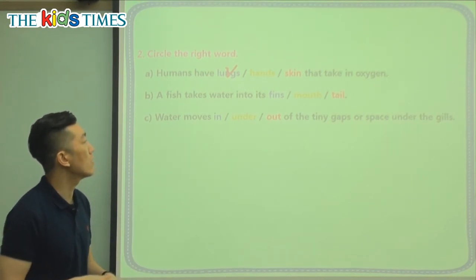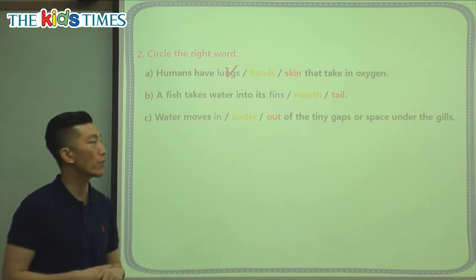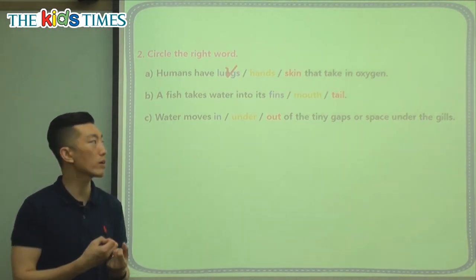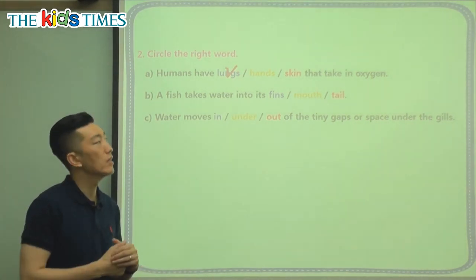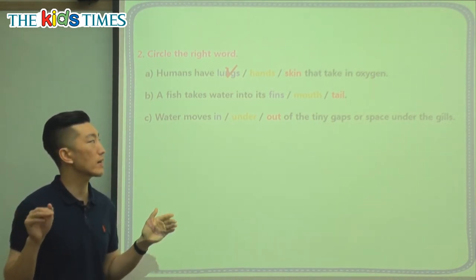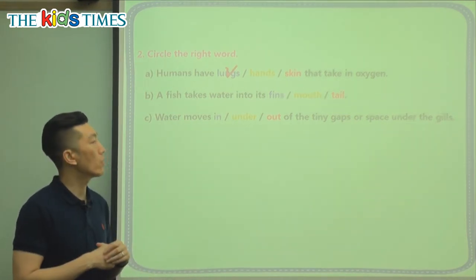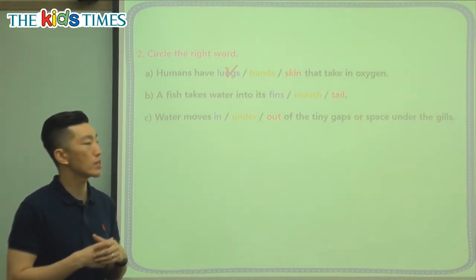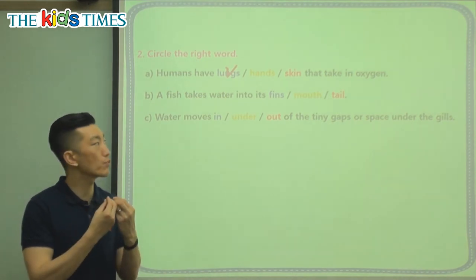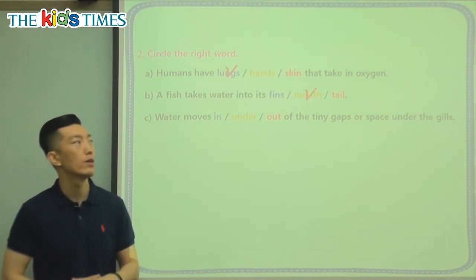A fish takes water into its fins, into its mouth, or into its tail — so where does it take in the water? Does it take it in through the tail in the back? Does it take it in through the fins, the tiny flaps on its sides? No — we know that water goes out of the gills, but it comes in through the front, through the mouth.